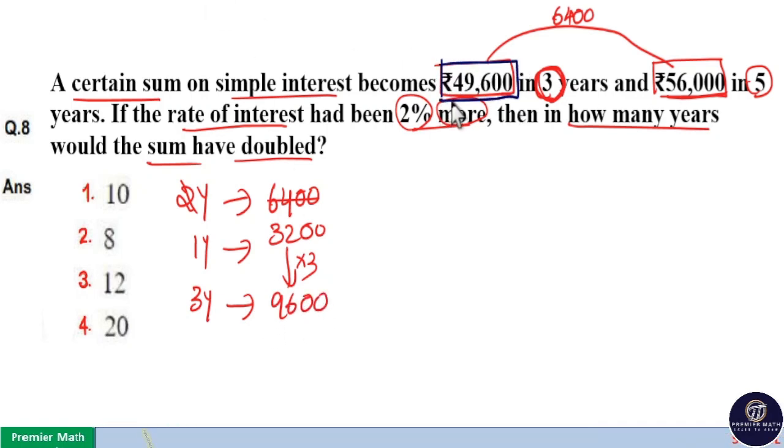Out of the ₹49,600 three-year sum, ₹9,600 is the interest generated, and the remaining ₹40,000 is the principal.